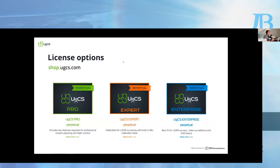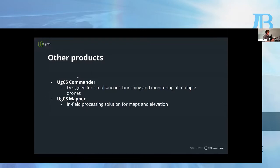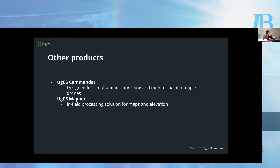For more information you can head to shop.ugcs.com to read more about the license options. We also have UGCS Commander, which can be used when you need to deploy multiple drones simultaneously — you can see telemetry from all of them at the same time, upload routes to multiple drones simultaneously, and launch drones at the same time. The main feature is monitoring multiple drones scanning a large area simultaneously, so you know what's happening with every drone at the same time.